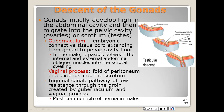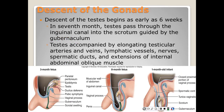The peritoneum also develops a fold extending into the scrotum as the vaginal process. This creates a path through the groin called the inguinal canal, which is the most common site for herniation in boys as well as in men. The descent of the testes begins as early as week six. The superior part of the embryonic gonad degenerates and the inferior part migrates downward, guided by the gubernaculum.